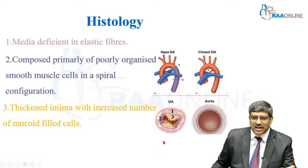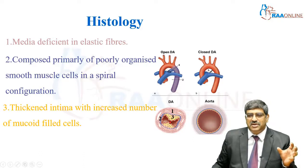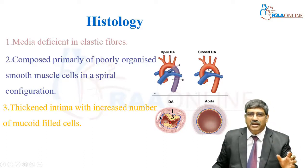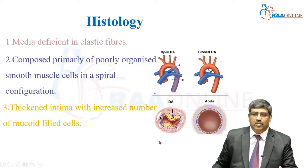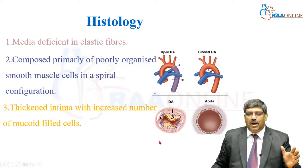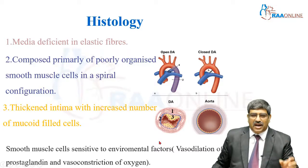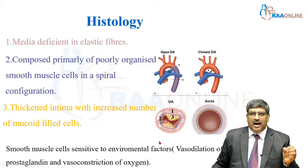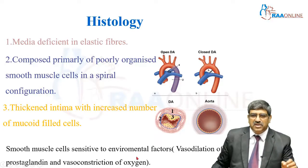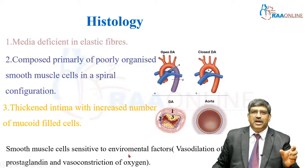Next is the intima. Here you can see a lot of mucoid-filled cells which are obfuscating the lumen. Because of this arrangement, the smooth muscles are very sensitive to environmental factors.